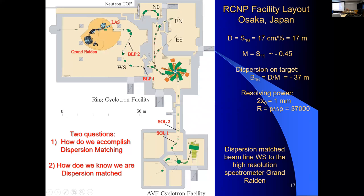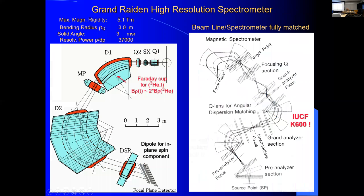So with dispersion matching implemented, now back to the slide shown earlier — with a trained eye you can see what this beamline does. It provides dispersion so that different momenta within the 120 keV beam spread arrive at one point in the focal plane. In addition, the angle for different momenta all coincide at the same angle in the focal plane, so you can also reconstruct the scattering angle.